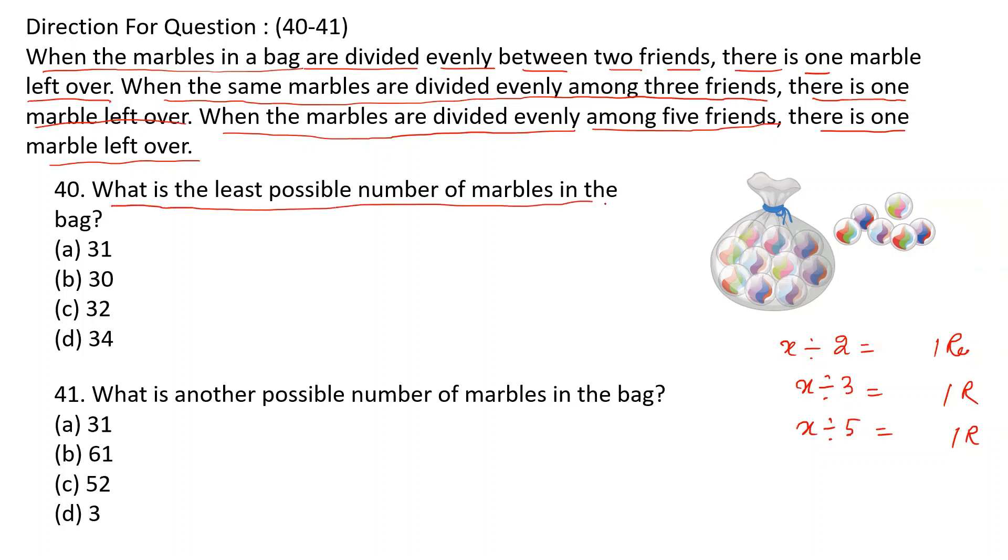What is the least possible number for the marbles in the bag? The options are 31, 30, 32, 34. First you will find out the number which is divisible by both two and three and five. That is nothing but your LCM of 2, 3, 5.